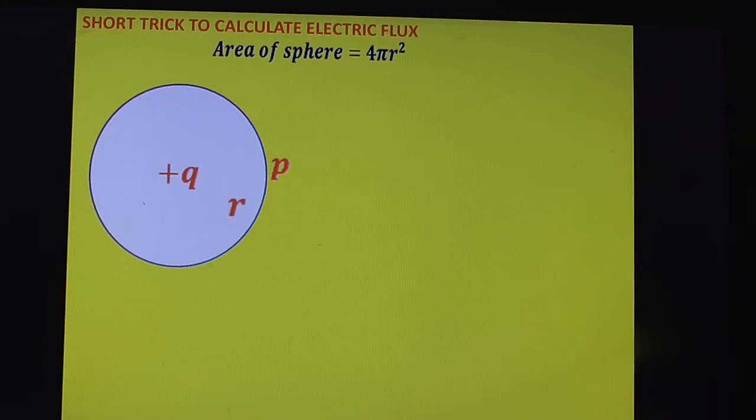Now electric field for this point P act in this direction. So you can write the magnitude of electric field E is equal to KQ by r square.